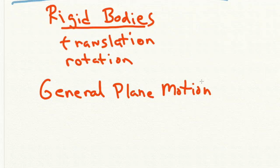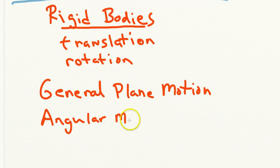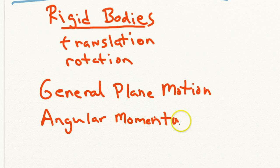And I'll just write them down here. General plane motion. And the example is of a rolling wheel. We'll talk about the concept of angular momentum and how that might be used.